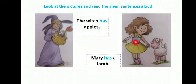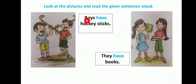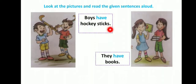Same here — Mary is a girl, so girl के लिए she use होगा। Mary has a lamb. Next — plural form में boys हैं, so they या we के साथ have आएगा। Boys have hockey sticks. And here, they have books.